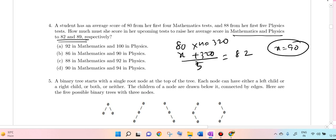Similarly, in the other case, (440 plus y) divided by 6 equals 89, so 440. This gives 94. So 94 and 90 is the answer. Obviously, 90 in mathematics and 94 in physics is the answer.